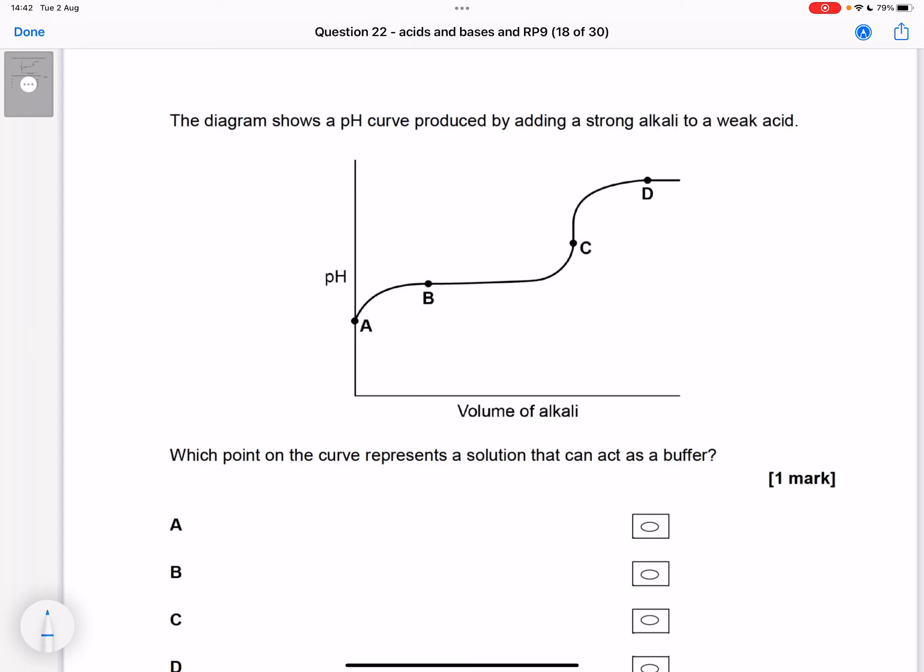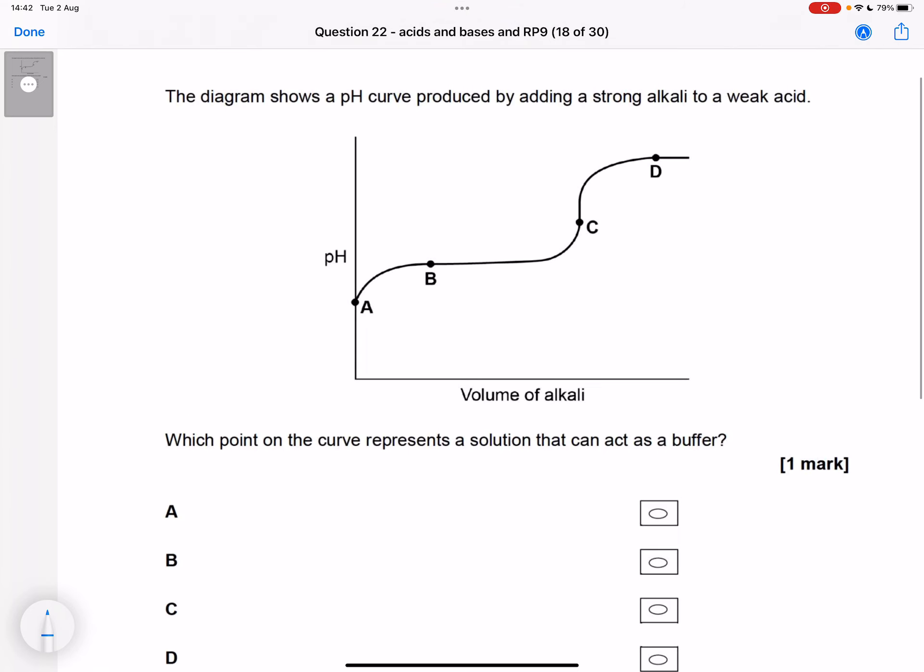A buffer is a mixture of a weak acid and its salt. So what have we got at each point on this curve? At A, all we've got is weak acid.